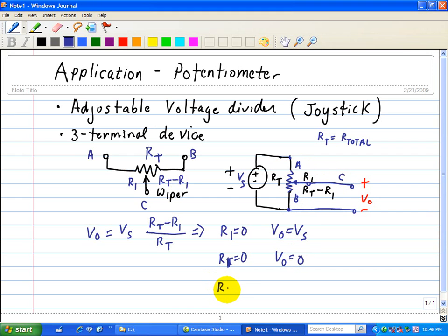then R1 is equal to one-half RT, which implies when you substitute here, V0 is equal to RT minus one-half RT divided by RT multiplied by Vs, or one-half Vs, half of the voltage.